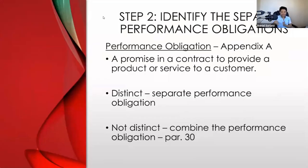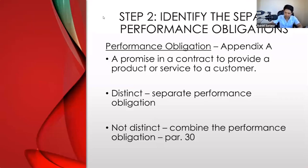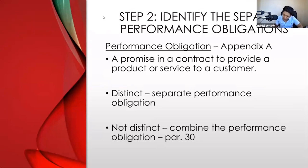We are now here in Step Number 3. But first, Step Number 2 is to identify the separate performance obligations. A performance obligation is defined in Appendix A of IFRS 15 as a promise in a contract to provide a product or service to a customer — meaning whatever you promised to the customer, that is what the customer is buying from you.